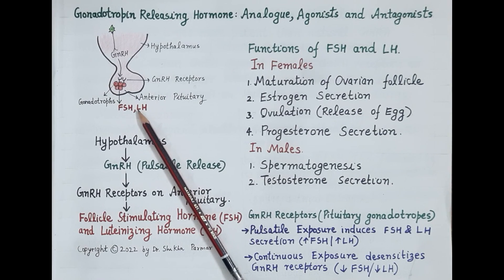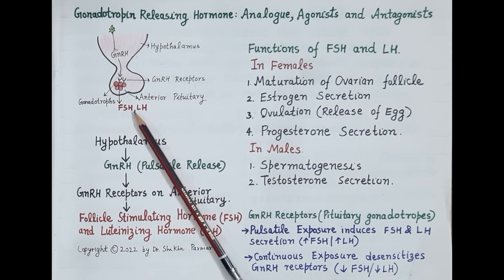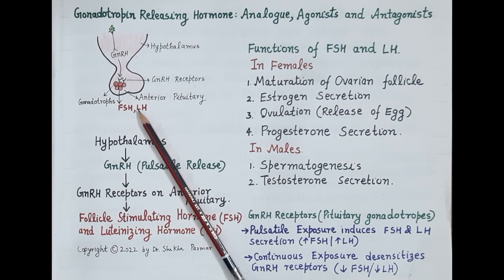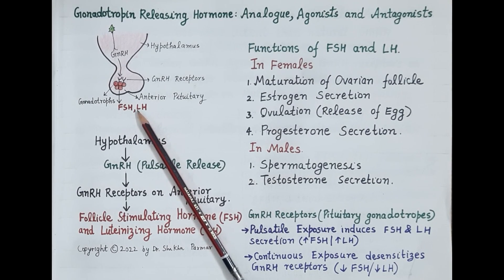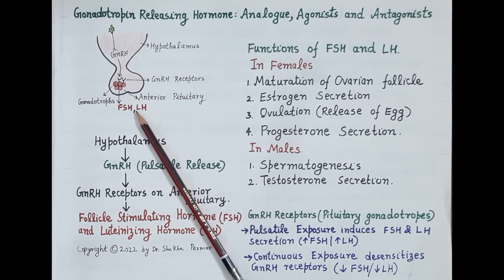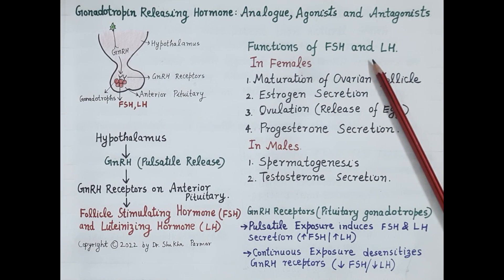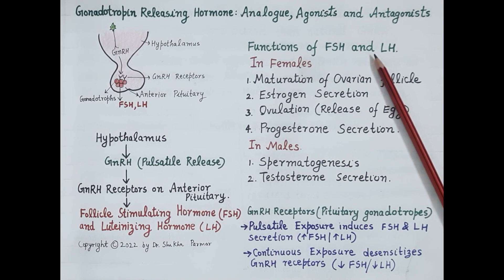Release of FSH and LH begins at puberty. LH and FSH are released cyclically in an alternate manner. The menstrual cycle in a woman is 28 days. FSH is predominantly produced during the first 14 days, that is during the follicular phase, while LH is predominantly produced during the luteal phase, lasting from day 15 to day 28 of the menstrual cycle.